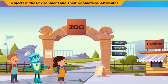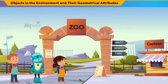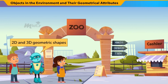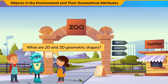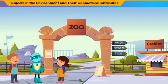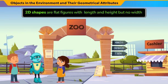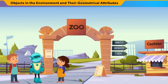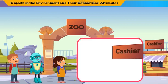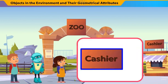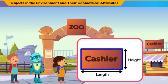Geometric shapes are everywhere. No matter where you look, almost everything is made up of two-dimensional and three-dimensional geometric shapes. Two-dimensional shapes are flat figures with length and height but no width. If I draw this name board, this has only length and height — there is no width.